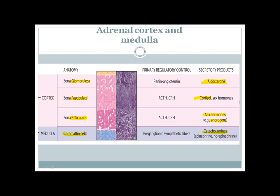Regarding control: zona fasciculata and reticularis are under the control of the hypothalamic-pituitary system. The hypothalamus secretes corticotropin releasing hormone (CRH), which goes to the anterior pituitary and stimulates the secretion of ACTH — adrenal corticotrophic hormone. ACTH is the main stimulator of release of substances from fasciculata and also from reticularis.